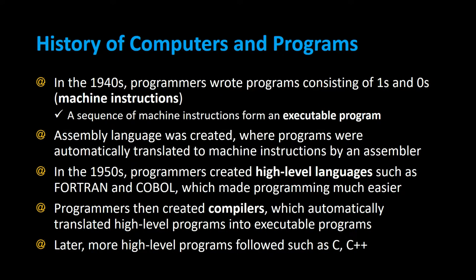In the 1940s, programmers wrote programs consisting of ones and zeros called machine instructions, and a sequence of these machine instructions formed an executable program — meaning a program that's able to be run. An assembly language was created where programs were automatically translated to machine instructions by a program called an assembler.